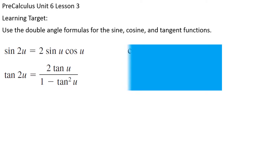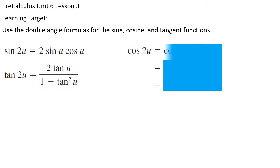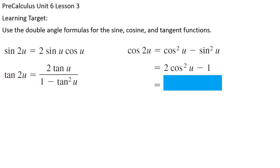Cosine is where it gets really interesting. For cosine of 2u, there are three choices — three different things it's equivalent to: cosine squared u minus sine squared u; 2 cosine squared u minus 1; and 1 minus 2 sine squared u. All three are equivalent, but when solving equations or verifying an identity, picking the right one makes life a lot easier. Part of the key is knowing when to use each variation.